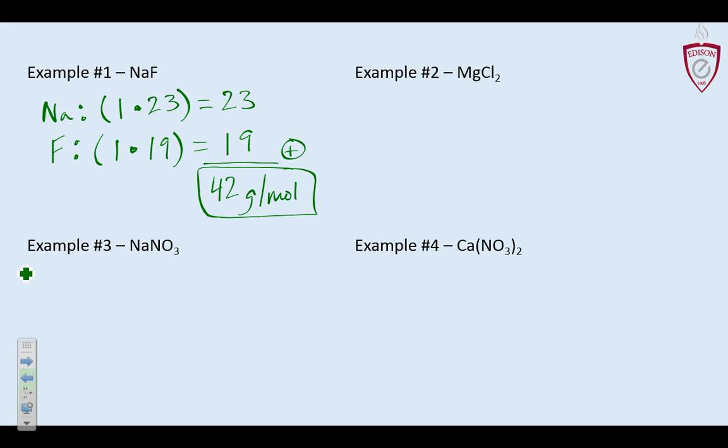That is the key idea: that is how much one mole of sodium fluoride would weigh — the amount of grams in one mole. It contains 6.02 times 10 to the 23rd formula units, but it weighs 42 grams. I can count that many atoms, molecules, and formula units by putting it on a scale and measuring out 42 grams.